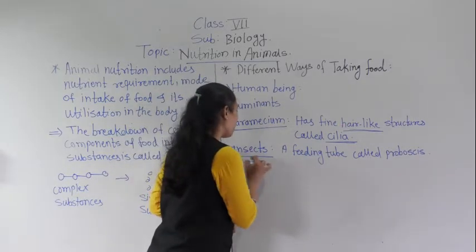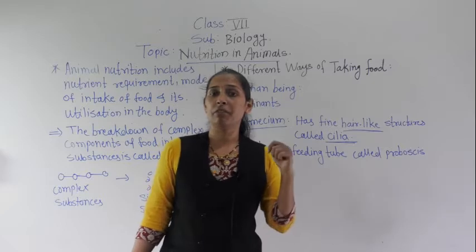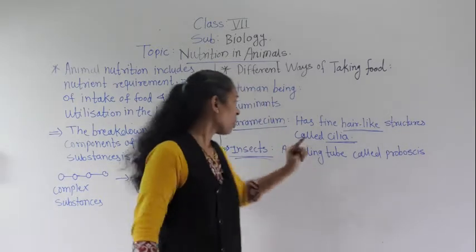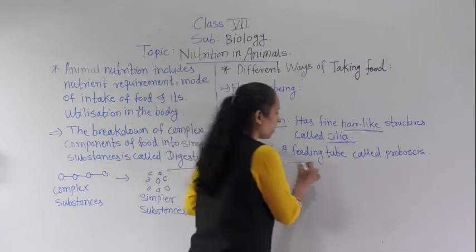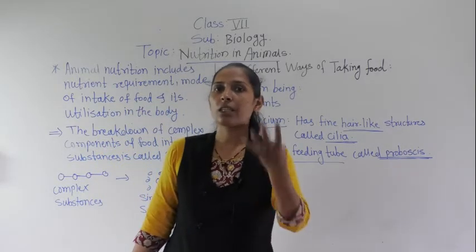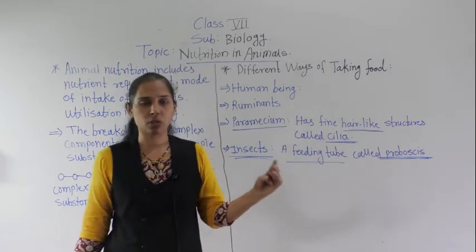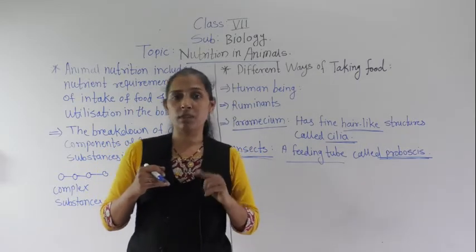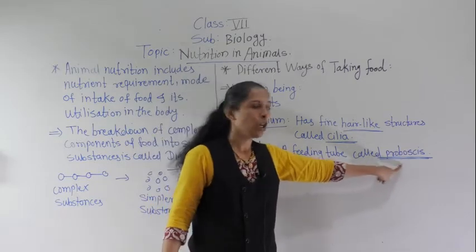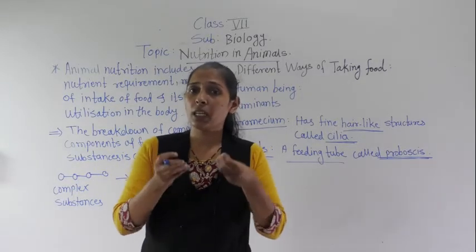Next let's discuss insects. There are a vast variety of insects on earth — mosquitoes, bees, honeybees, and others. All these insects have a feeding tube called a proboscis. With the help of the proboscis they suck nutrients from other organisms or food sources. This sucking process is similar to how we drink cold drinks through a straw — the same process happens with the help of the proboscis. So different organisms have different ways to take in food.